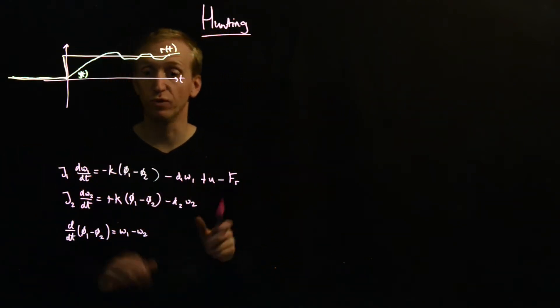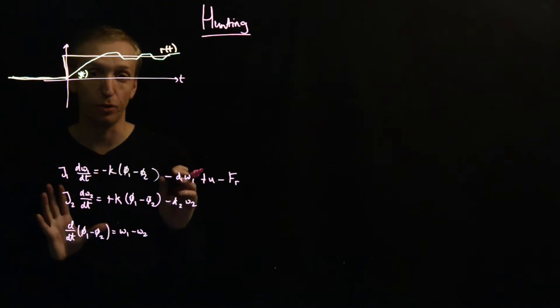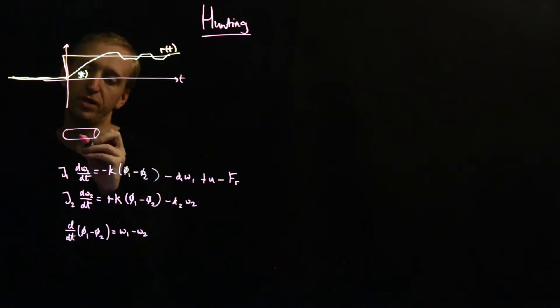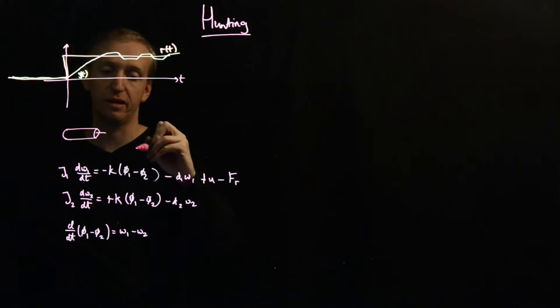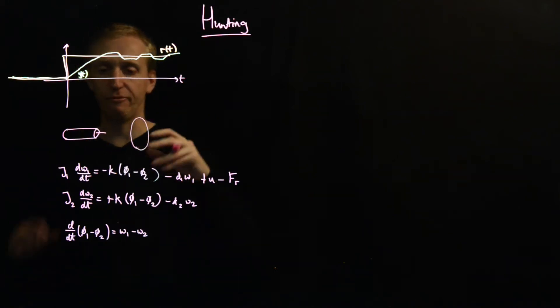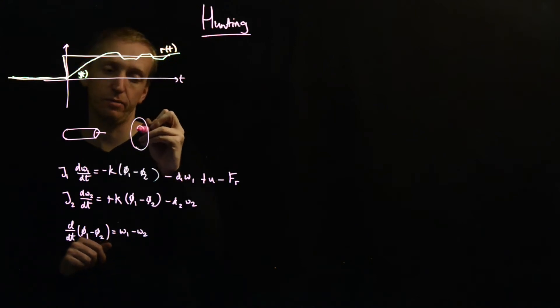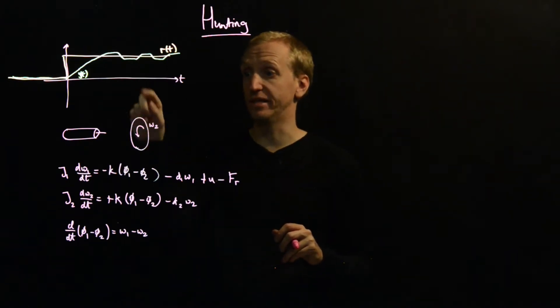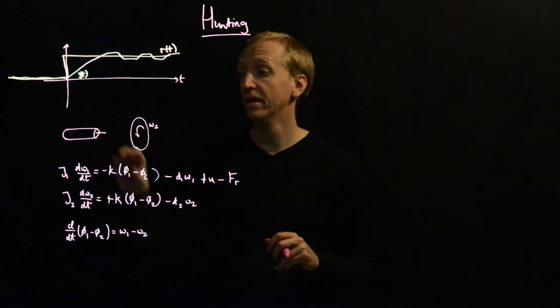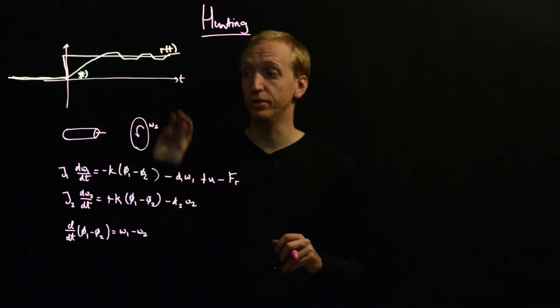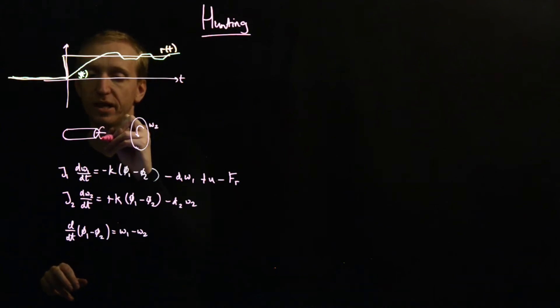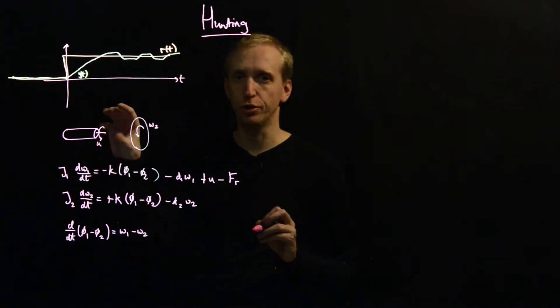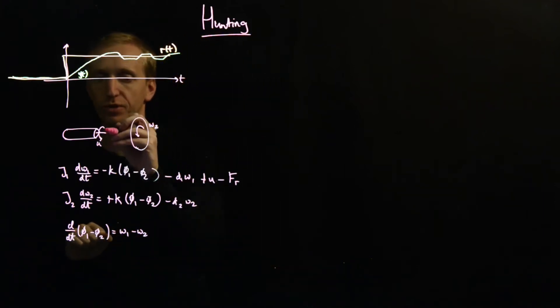And now the details aren't really important here. Once again this is not a course about modeling. But to give you a picture, we have some motor that is driving some load. And everything is rotating here. And this load is rotating at angular velocity omega 2. And we want to control the angular velocity here. So this is our output of interest y. And we're interested in controlling the angular velocity using the motor. And we can apply some force u with our motor.